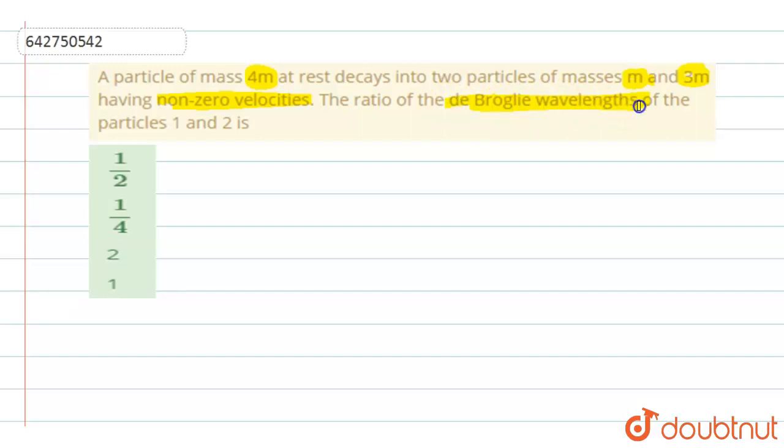So what is happening in this question is you have a particle of mass 4m which decays, that is which splits up into two particles, one of mass m and another of mass 3m. These two have non-zero velocities, meaning they are moving. So when they are moving, you are supposed to find the ratio of the de Broglie wavelength.